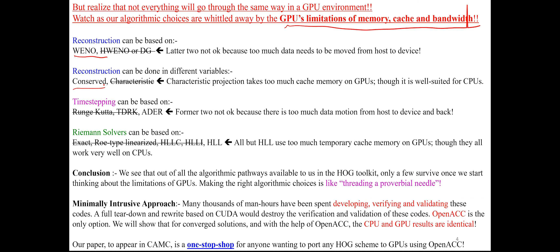There are multiple choices for how to do the reconstruction and in which variables to do it, all detailed in the paper. For time stepping, out of all available choices, only one remains as a good option. Out of all possible Riemann solvers, only one remains as a good option. Despite the many algorithms available in the higher-order Godunov toolkit, only a few meet all the GPU limitations — it's literally like threading a proverbial needle.